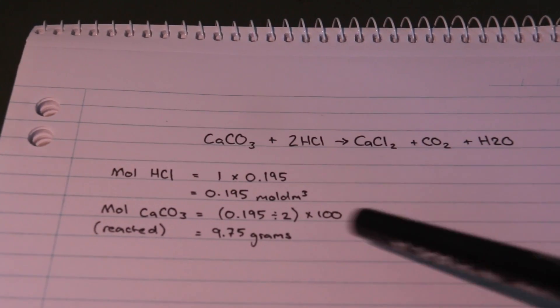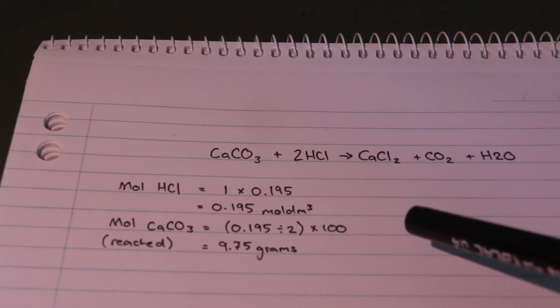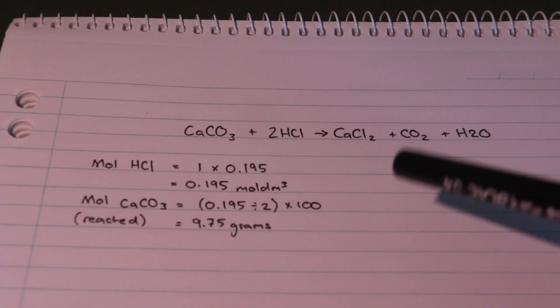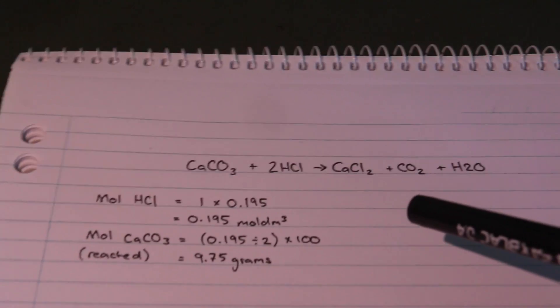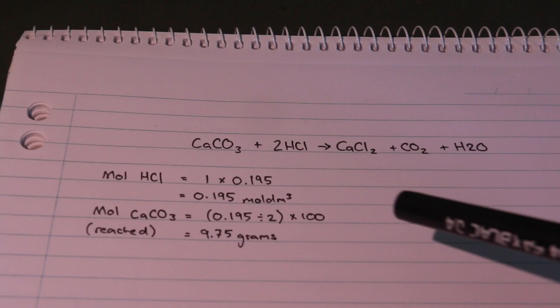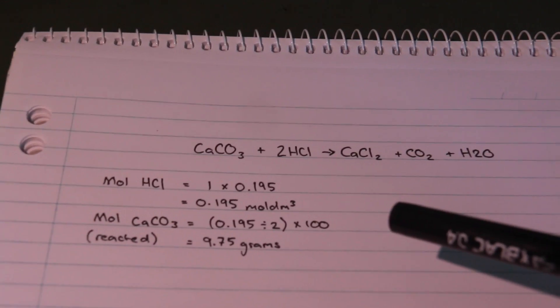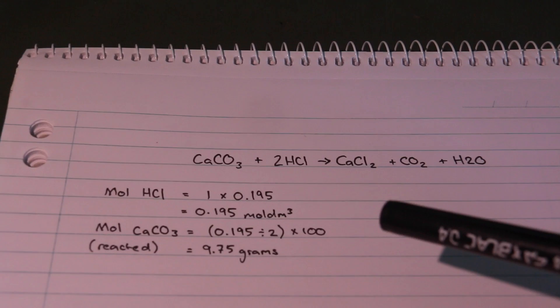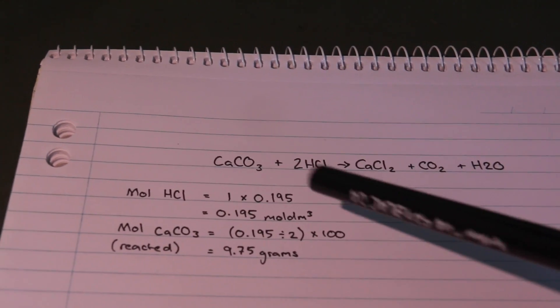Now I calculated the mass of the rock which should have been dissolved by the acid assuming a couple of things. The first thing I assumed was that the acid was one mole solution. The second thing I assumed was that the stone was almost pure calcium carbonate, and so this is what I came up with.